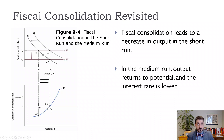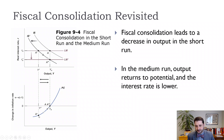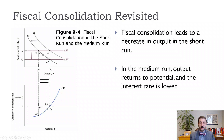Now we know that if we have a negative output gap — output is lower than the natural level of output — then inflation falls. So we're here at A prime, and if inflation falls, that means inflation is lower. Remember, the real interest rate is the nominal interest rate minus inflation. Now inflation is lower, so the real interest rate is going to be lower.